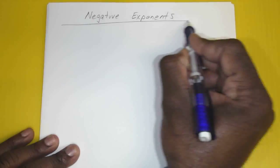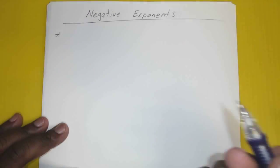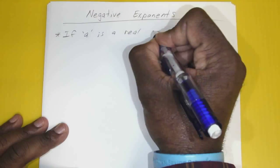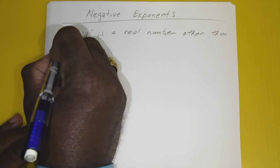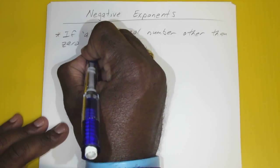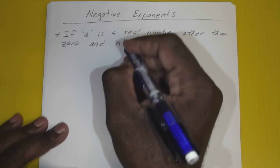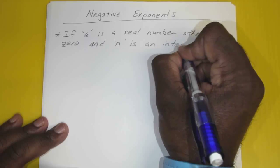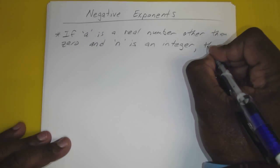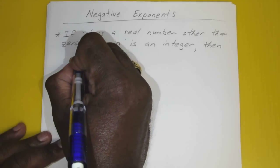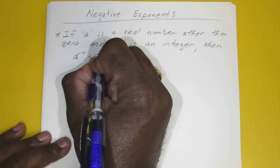Today we are going to cover negative exponents. If we have a real number a — other than zero — and n is an integer (zero, positive, or negative one, positive or negative two, etc.), then we know that a to the power of negative n is equal to one over a to the nth power.